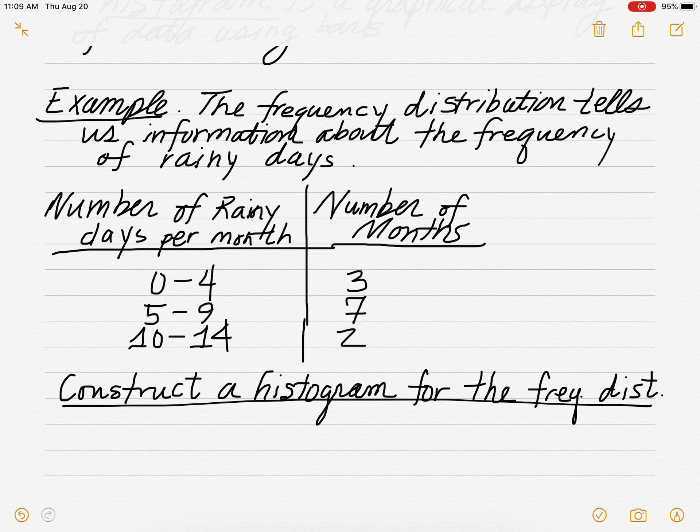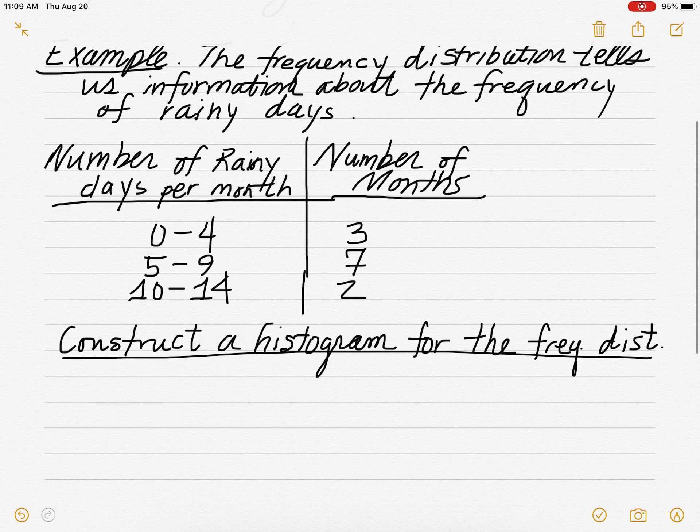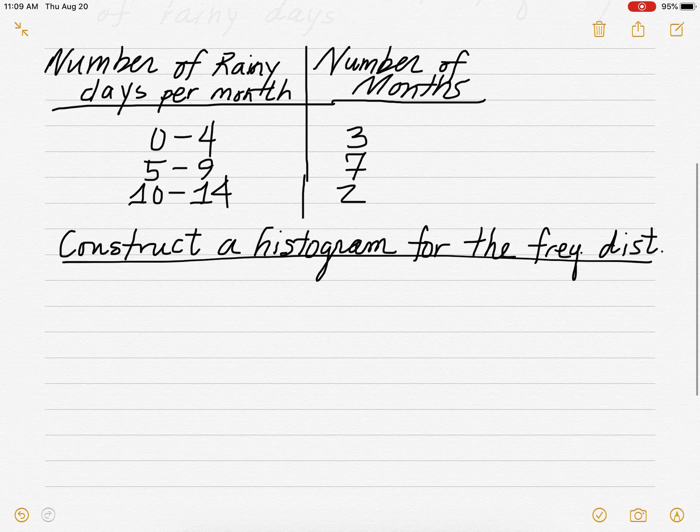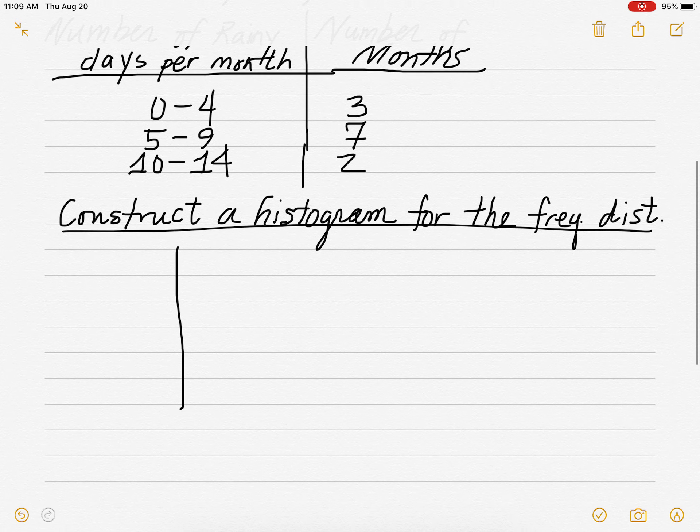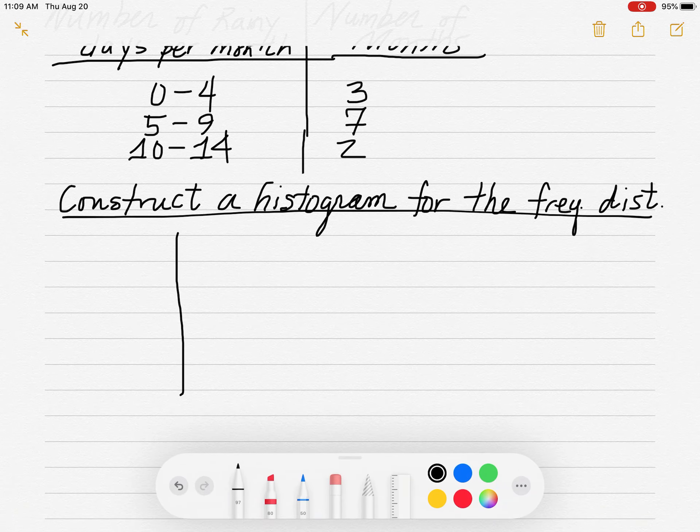So there are a couple of ways you can construct histograms. I'm going to show you the first way. I'm going to call this the easy way. So what you want to do, you want to create a vertical axis and a horizontal axis. Let me scroll up a little more so I have some space. And a horizontal axis.